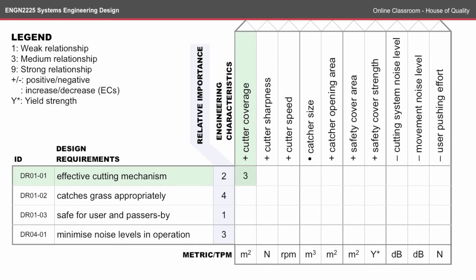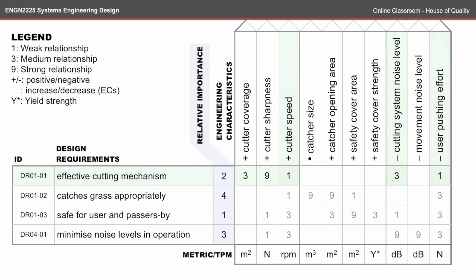The process of filling in the interrelationships is basically going through and deciding whether or not there is a relationship between each design requirement and engineering consideration. For example, I've decided there's a medium relationship between two things and given it a value of 3 — if you change something to do with the cutting mechanism, it's likely to change the cutting coverage. Going through all of them, you can see that the effectiveness of the cutting mechanism isn't as strongly correlated to cutter speed but is very related to cutter sharpness, and also has some relationship on noise level. You end up with an idea of which engineering characteristics will affect the design requirements.